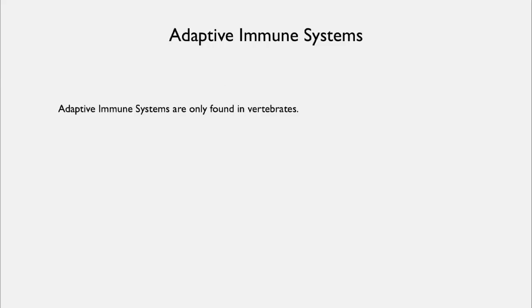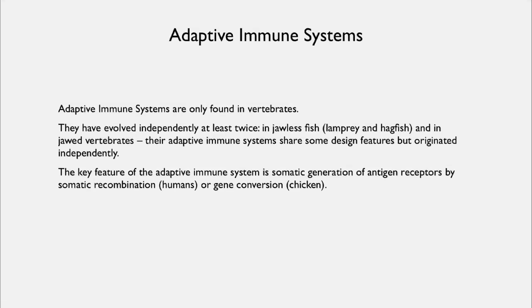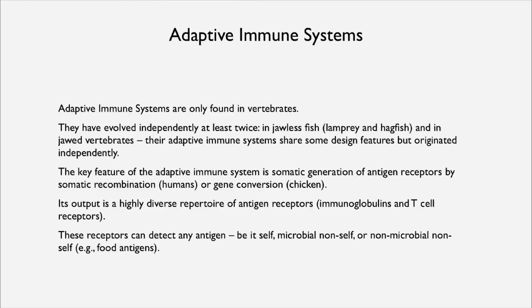The adaptive immune system is only found in vertebrates, and it evolved independently at least twice — once in the jawless fish such as lampreys and hagfish, and once in the jawed vertebrates. Their immune systems share some features but clearly originated independently. The key feature is somatic generation of antigen receptors by somatic recombination in mammals or gene conversion in birds, producing a very diverse repertoire of receptors — immunoglobulins and T cell receptors — that as a whole can detect virtually any antigen, whether self, microbial non-self, non-microbial non-self, or a food antigen.